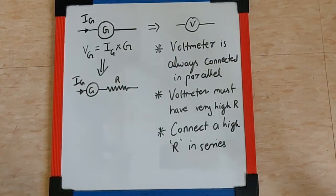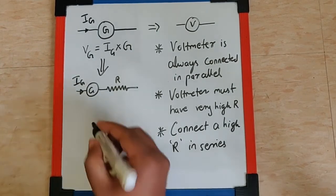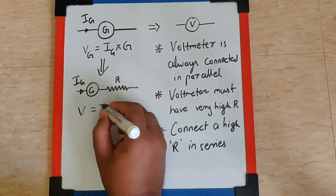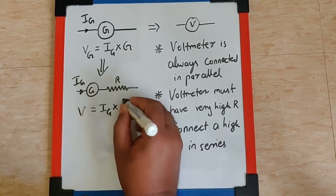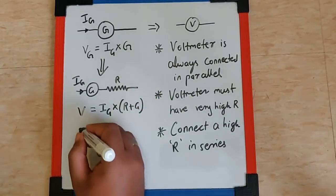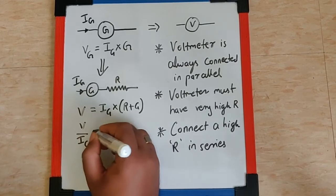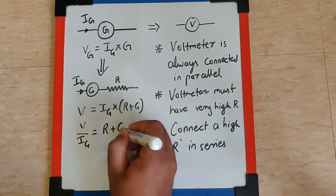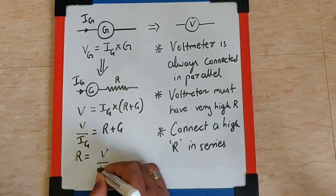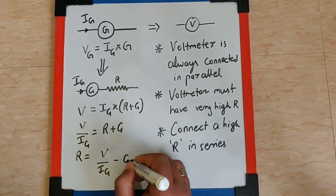Since the resistances are connected in series, the current passing through both of them will be same. So I can say IG remains as it is. Now the voltage across this combination can be written as current passing through this into R plus G, which means V by IG is R plus G and so R is V by IG minus G.